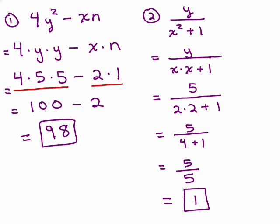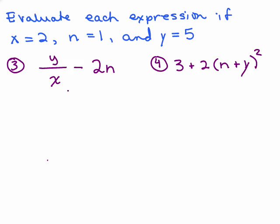So we have 5 over 5, and then 5 divided by 5 is 1. So the final answer here will simply be 1.